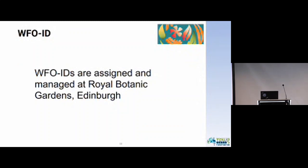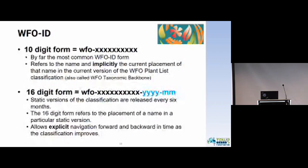WFO IDs are all assigned and managed at the Royal Botanic Gardens, Edinburgh. WFO IDs come in two forms. The 10-digit form is 'WFO' followed by a dash and 10 numeric digits. This is by far the most common WFO ID form. It refers to the name and implicitly to the current placement of that name in the current version of the WFO Plant List classification — also called the WFO taxonomic backbone.